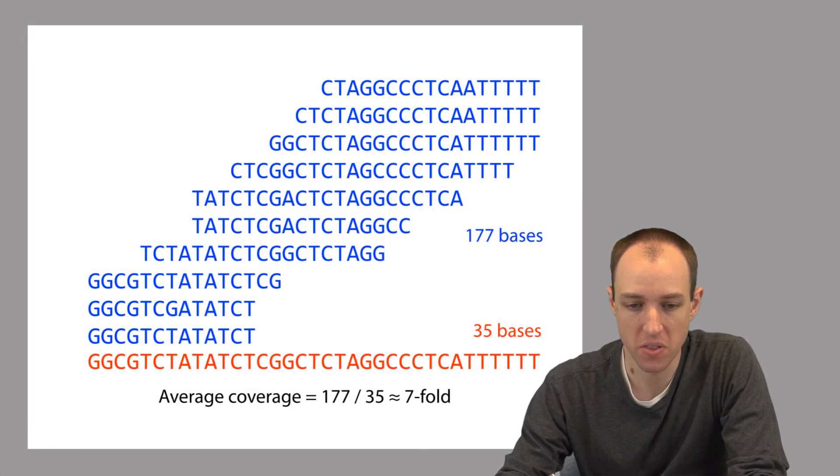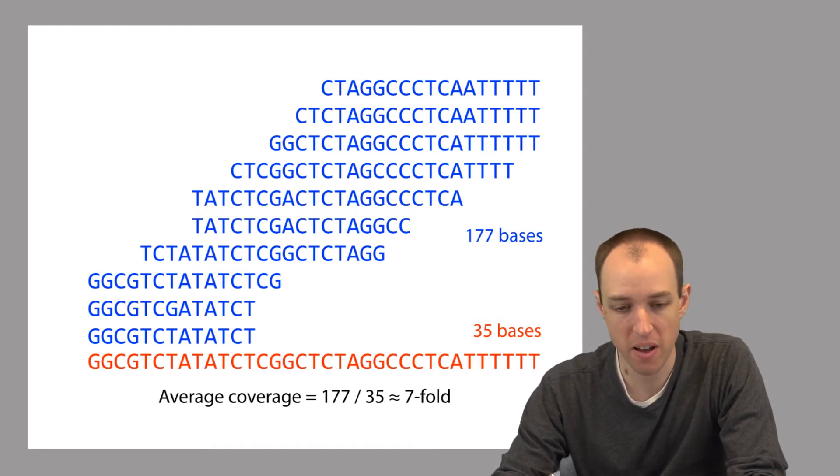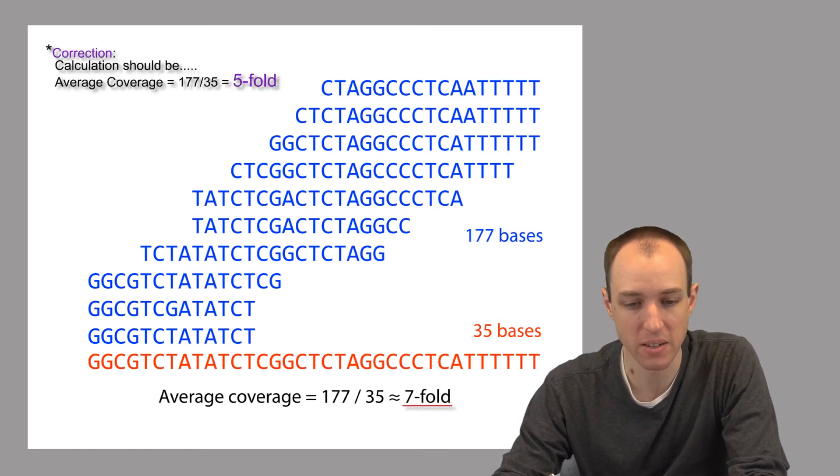We can also define overall coverage. Overall coverage is basically the coverage averaged over all positions of the genome. So we can calculate overall coverage by taking the total length of all the reads and just dividing by the total length of the genome. By the way, this means that we have to have some idea of what the length of the genome is in order to calculate average coverage. So in this example, there are a total of 177 bases in all the reads, and the genome is about 35 bases long, so the average coverage is about seven. So we might say we have seven-fold coverage.